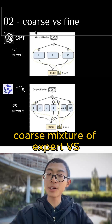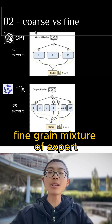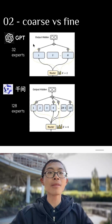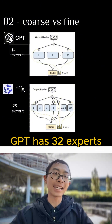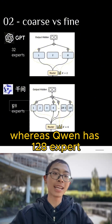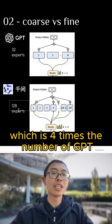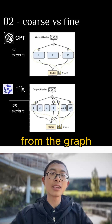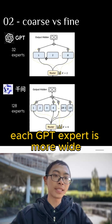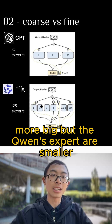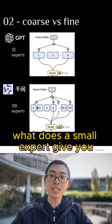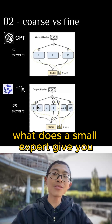Second difference: coarse mixture of experts versus fine-grained mixture of experts. GPT has 32 experts, whereas Qwen has 128 experts, which is 4 times the number of GPT. From the graph, each GPT expert is wider and bigger, but Qwen's experts are smaller. What does a small expert give you?